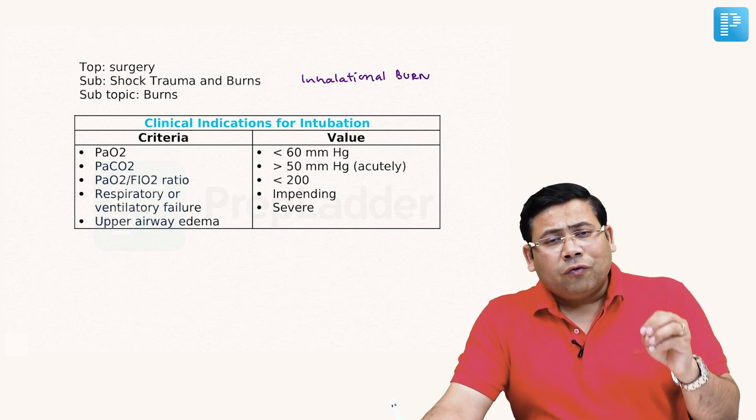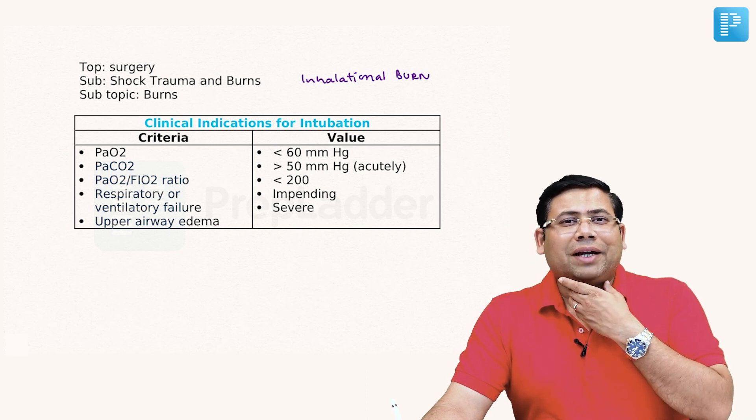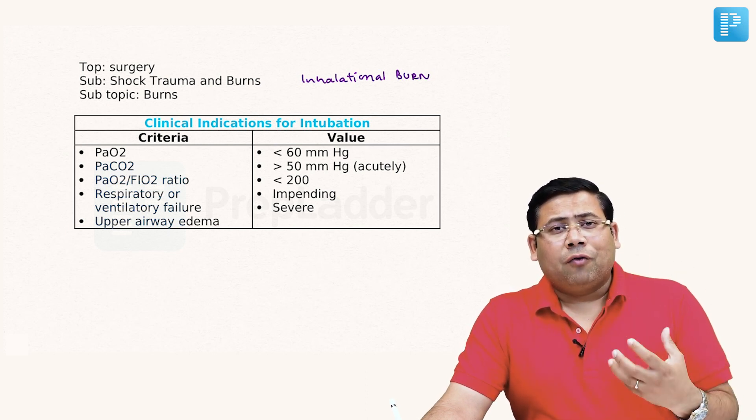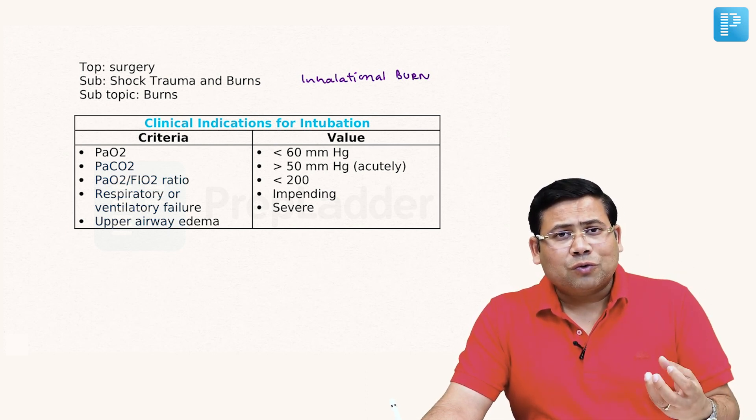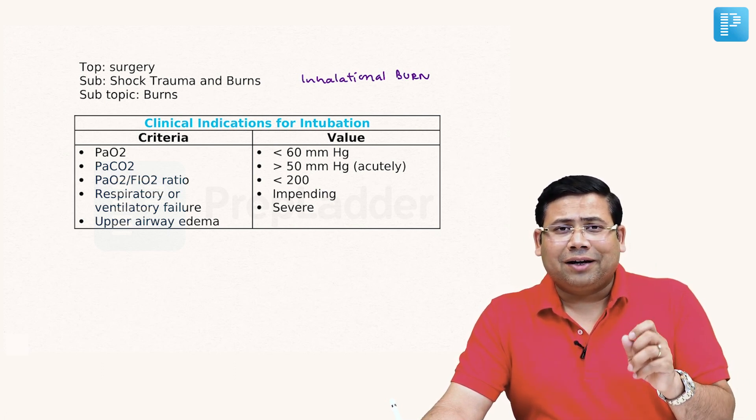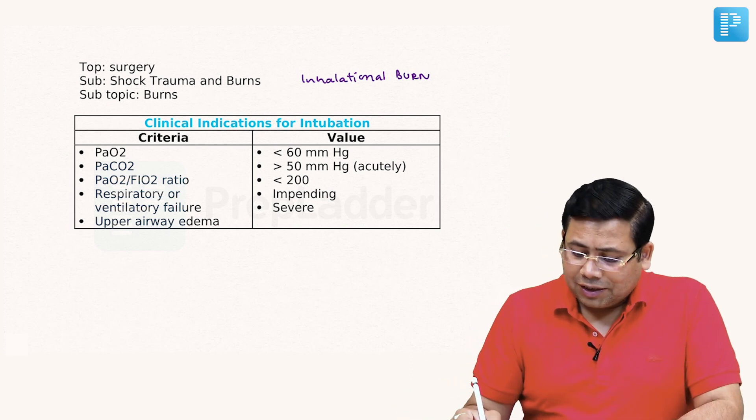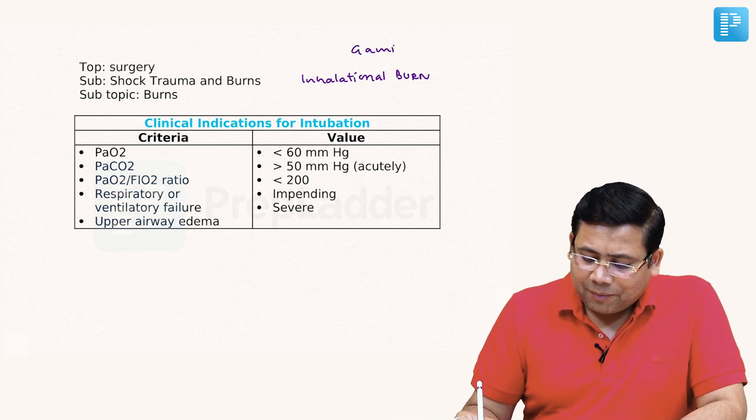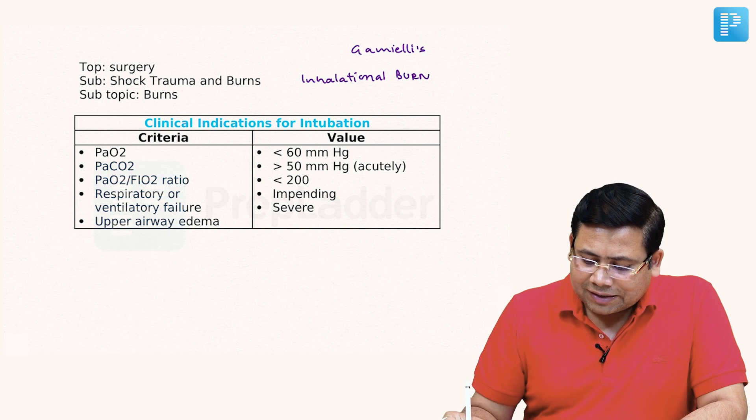People used to say that if you don't go for prophylactic intubation, the patient might develop pharyngeal edema. But now we have flexible fiberoptic bronchoscopy, and we have bronchoscopy-based assessment criteria for inhalational burn. That is known as Gemi-Ali's criteria.